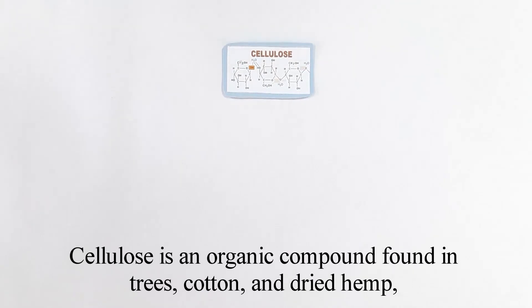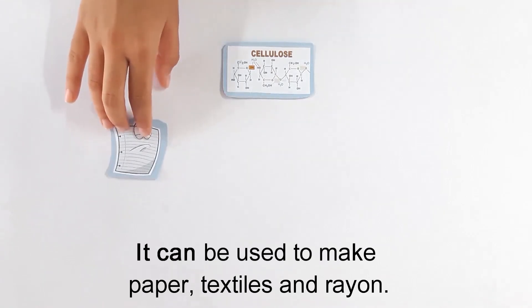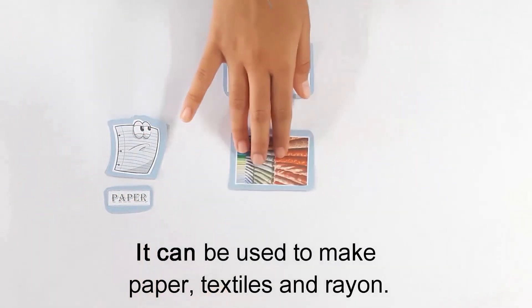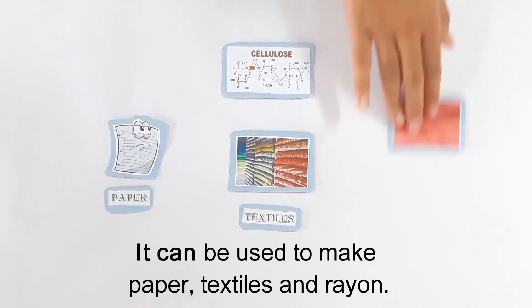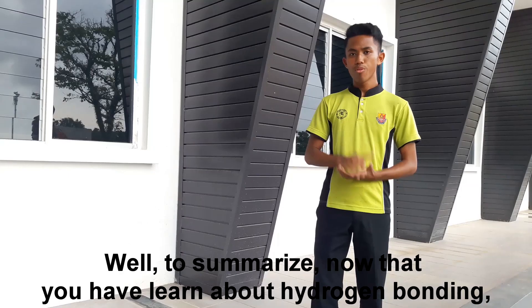Cellulose is an organic compound found in trees, cotton, and dried hemp. It can be used to make paper, textiles, and rayon. Hydrogen bonds are important to maintaining the shape and form of the cellulose compound.